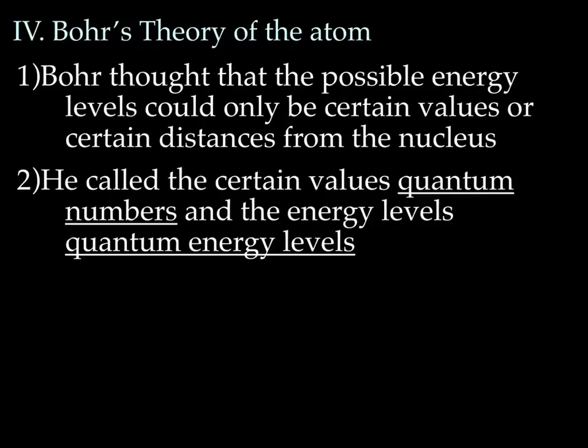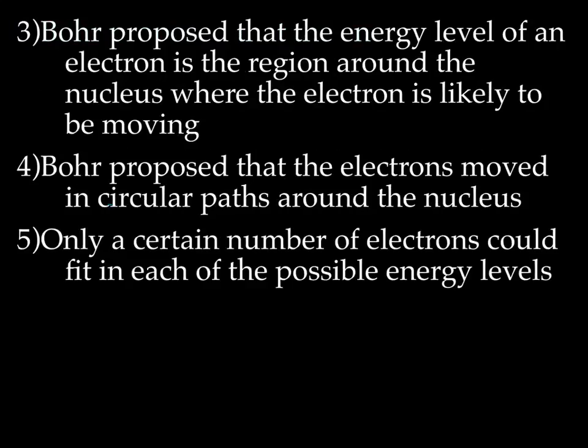So, Bohr's theory of the atom. Bohr thought that the possible energy levels could only be certain values or certain distances from the nucleus. And he called the certain values quantum numbers, and he called the distances from the nucleus quantum energy levels. So, Bohr proposed that the energy level of an electron is the region around the nucleus where the electron is likely to be moving. And hopefully, you recognize that as the definition of an energy level. He did not know about sublevels or orbitals.